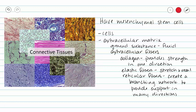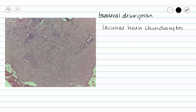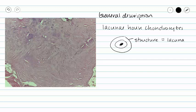In this video we will be covering fibrous cartilage, also called fibrocartilage. Before we talk about fibrous cartilage specifically, let's talk about cartilage in general. All cartilage is going to have lacunae that house our chondrocytes. So all of our cartilage is going to have these spaces, and inside of those spaces we will see our chondrocytes. The space or the structure is our lacunae, and the cell inside of that structure is our chondrocyte.